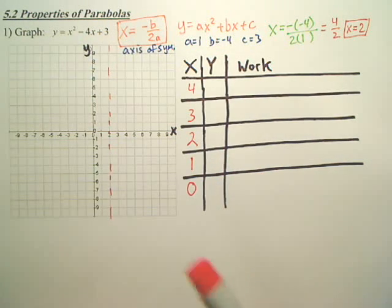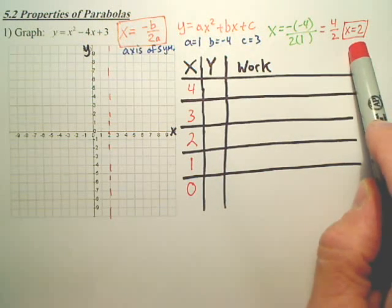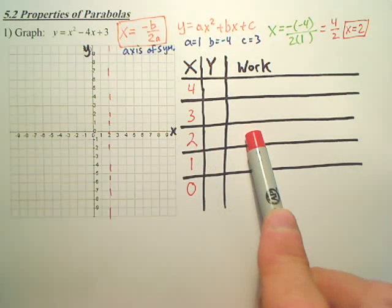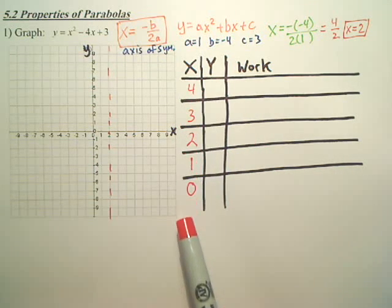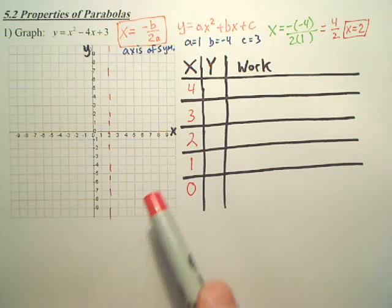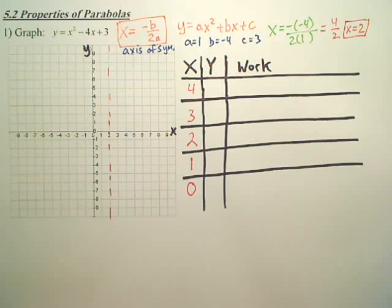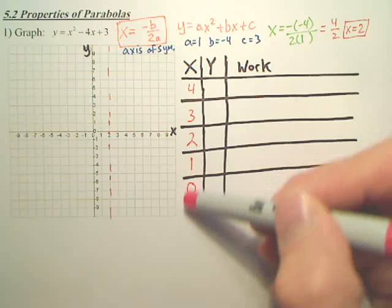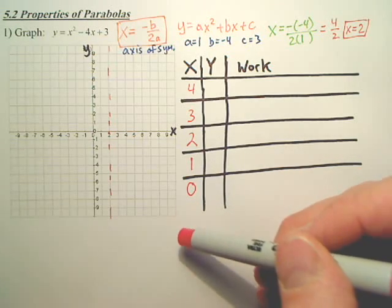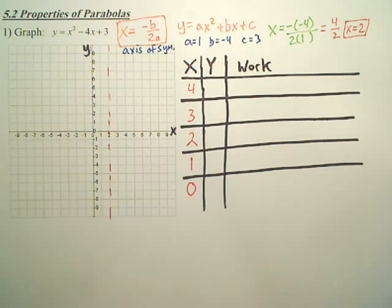Now, what you're going to do again is whatever you get for your axis of symmetry, that's your middle value for a table. Then you get two values above, two values below. Just go one above, one above that. You just go by increments. Now, most of you are used to going from 0 to 4. I kind of went backwards. It doesn't really matter. You'll see why.